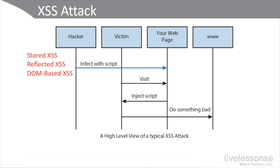Historically, a hacker could choose from three different types of XSS attacks. Stored XSS typically happens when user input is stored on the target server — for example, in their back-end database, a visitor log, a comment field, or a message forum. The victim then retrieves the stored data from the web app without the data being cleaned before it's rendered in the browser.